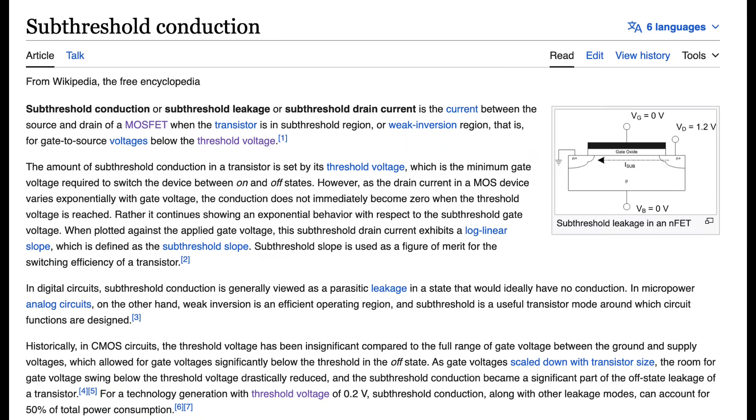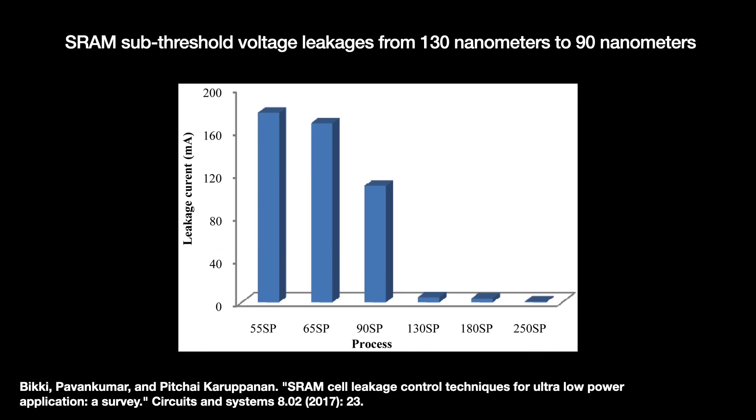When the gate's voltage lowers below the threshold, it is supposed to cleanly shut down the current between the source and drain. It doesn't always. And the residual current, like a dripping faucet, is called the sub-threshold leakage. The lower the threshold voltage is, the higher the sub-threshold leakage gets, in turn.